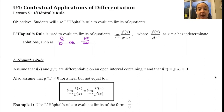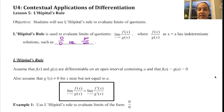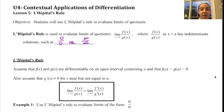Now when we first encountered 0/0 in unit 1, we had to go back and simplify the problem — we had to factor, foil, simplify trig, use the conjugate pair. All of that worked to get us to the solution, but I have good news: we don't have to do all that this time.